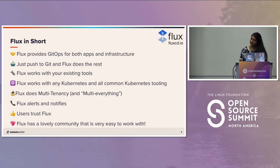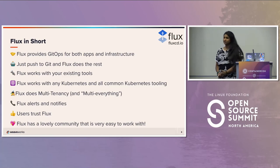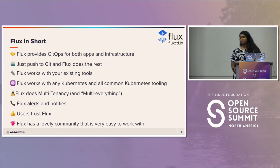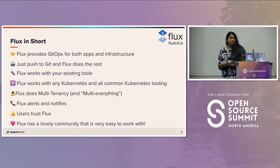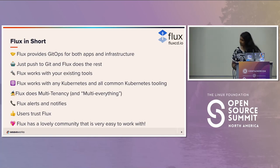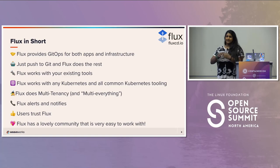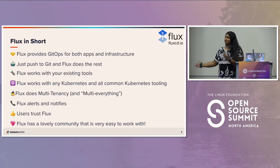We like to say that Flux provides GitOps for both apps and infrastructure. With the progressive delivery solutions, you can also use Flux with Flagger to do progressive delivery — AB rollouts, canaries, feature flags, whatever. You can just push to Git and Flux does the rest. It's as simple as setting it up on your cluster and walking away — every time you make a Git change, it takes care of everything for you.